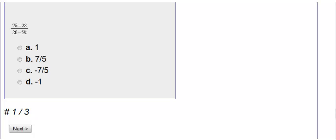Here we're actually simplifying this fraction. What I'm going to do is look at the top and the bottom separately. So I look at the top and ask myself what can I pull out. In the top I can pull out a 7. When I pull out a 7, I'm left with k minus 4.